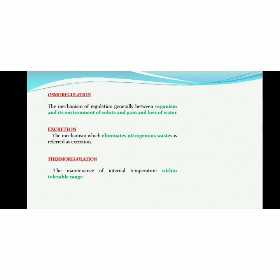After that is thermoregulation. Thermoregulation is basically the maintenance of internal temperature within a tolerable range. This tolerable range is different for every organism. The tolerable range means how much capacity an organism has to face any external fluctuation. For example, if an organism is living in moderate water availability, it would not be possible for it to survive in drought conditions.